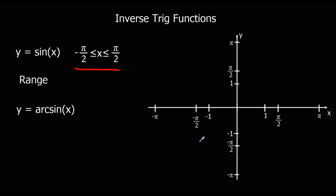So the key points of the graph: it's going to go through minus pi over 2, minus 1; it's going to go through 0, 0; and it's going to go through pi over 2, positive 1. And we're going to get a graph that looks like this — that's our original y equals sine x.